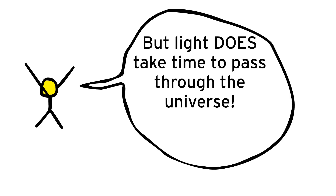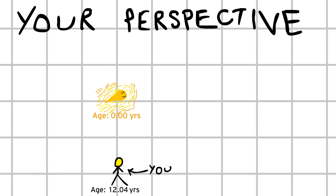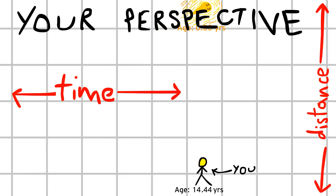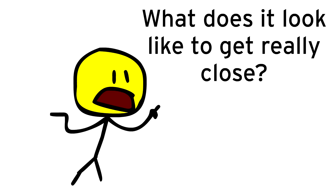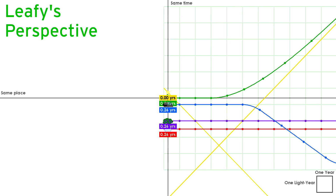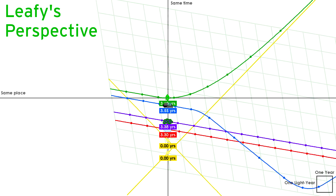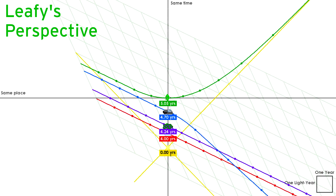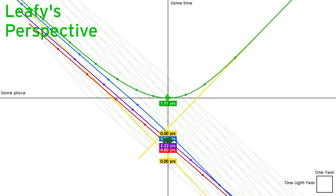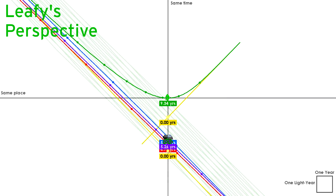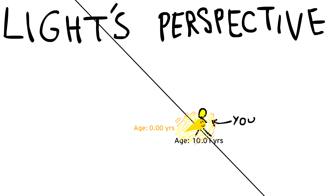You might be thinking: but light does take time to pass through the universe — it takes one year per light year, in fact. Well, that's just from your perspective, a perspective where the universe actually has both time and distance. Not so in light's eyes. If objects can't move at the speed of light, what does it look like to get really close? Let's look at Leafy as she travels faster and faster, approaching light speed but never quite getting there. As expected, light rays still travel at the speed of light away from Leafy, despite Leafy changing speed. You can see that as Leafy gets close to the speed of light, the other objects are getting closer and closer to each other — the entire universe is shrinking. You can imagine how, if Leafy did go at the speed of light, the objects would get so close they'd just be a single point, which is what light itself sees.